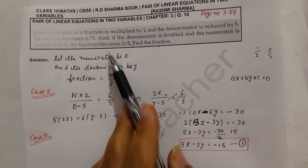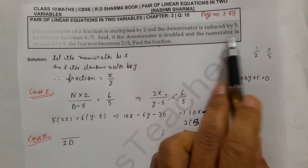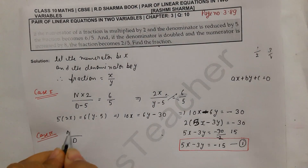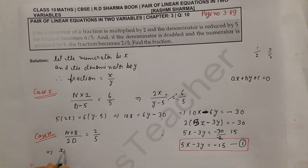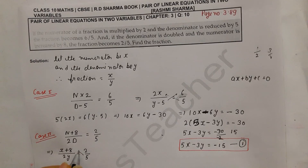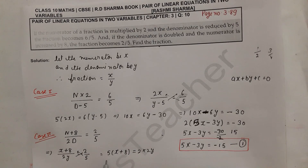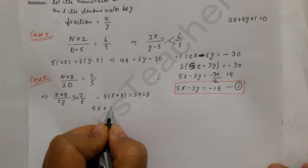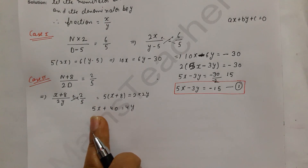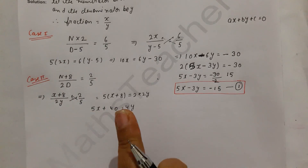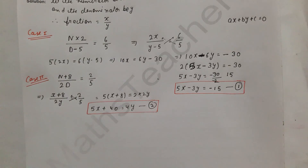Case two: if the denominator is doubled, we multiply y by 2, and the numerator is increased by 8, we add 8 to x. The fraction becomes 2/5, so we write: (x plus 8) upon 2y equals 2 upon 5. Cross-multiplying gives 5x plus 40 equals 4y, so 5x minus 4y equals minus 40. This is equation number two.